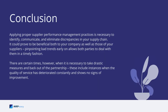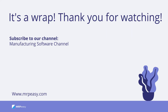Applying proper supplier performance management practices is necessary to identify, communicate, and eliminate discrepancies in your supply chain. It could prove beneficial both to your company and to your suppliers. Pinpointing bad trends early on allows both parties to deal with them in a timely fashion. There are certain times, however, when it is necessary to take drastic measures and back out of the partnership — particularly when the quality of service has deteriorated constantly and shows no signs of improvement.